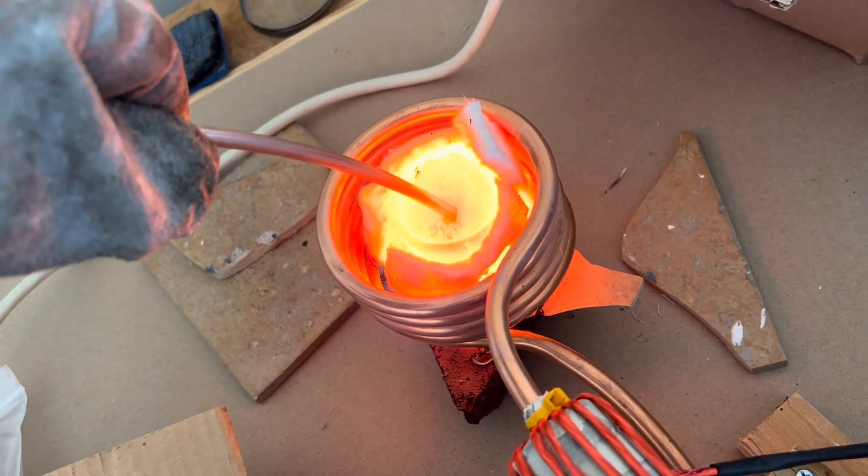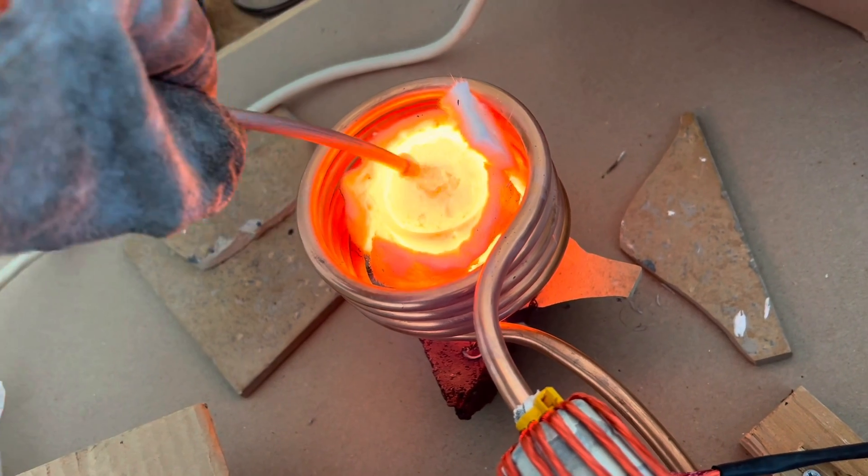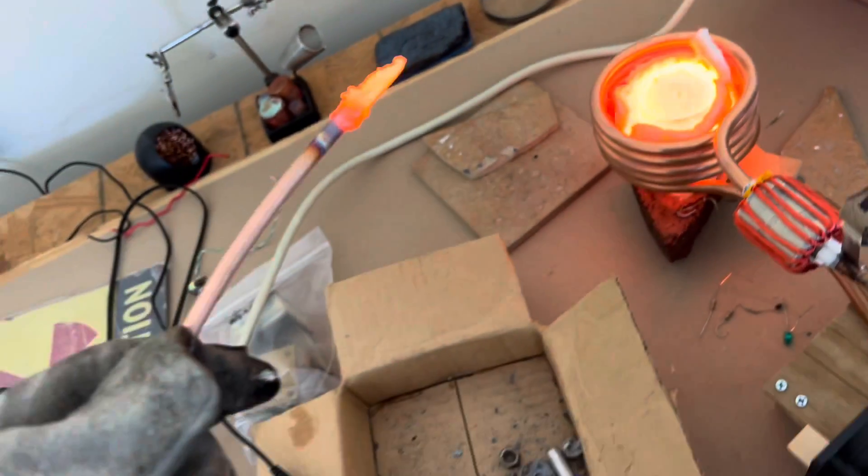See how rapidly it melts this copper tubing. It's using approximately 2.7 kilowatts to do this.